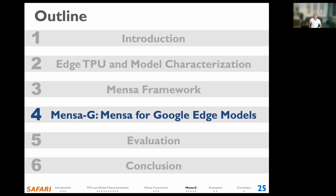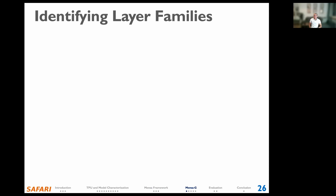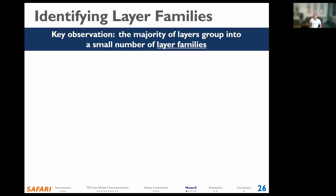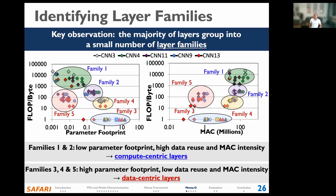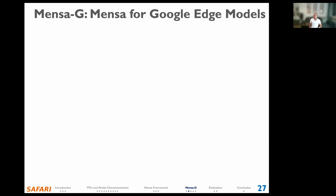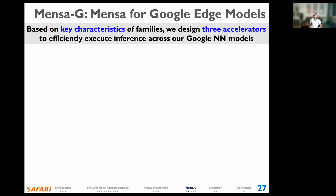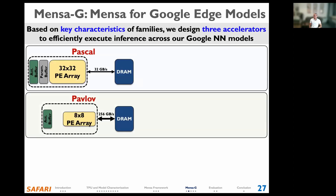We highlight how MENSA can be employed in practice by proposing MENSA-G, targeting Google Edge neural network models. We observe that the majority of the layers fall into five major families in terms of characteristics that impact hardware design. Families one and two have low parameter footprint, low data reuse, and high MAC intensity — these are compute-centric layers. Families three, four, and five have high parameter footprint, low data reuse, and low MAC intensity — these are data-centric layers. Based on these characteristics, we designed three specialized accelerators: Pascal, Pavlov, and Jackport.